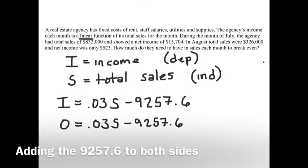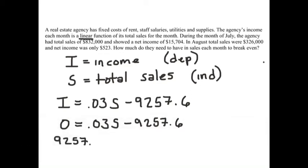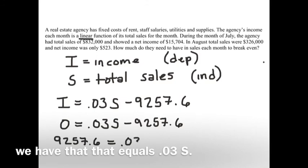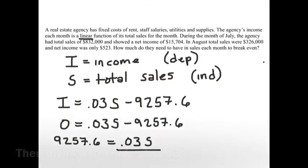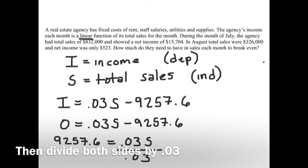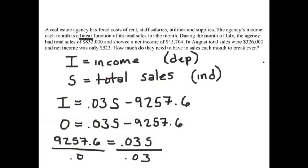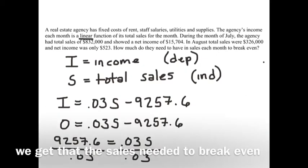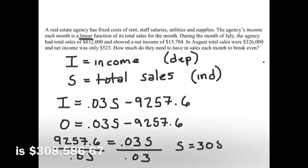Adding 9,257.6 to both sides, we have that that equals 0.03S, then divide both sides by 0.03. We get that the sales needed to break even is $308,586.67.